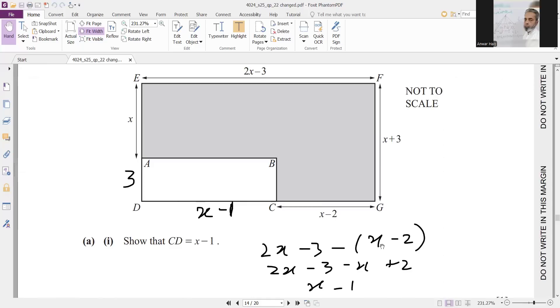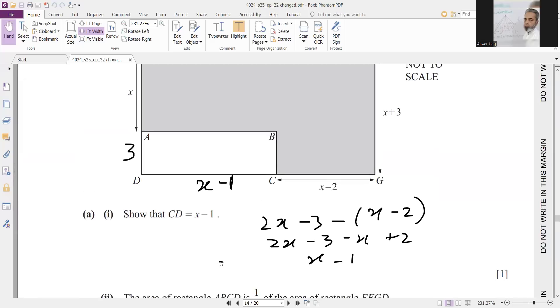2x minus 3 minus x minus 2. You have to mark brackets because there is a negative sign before. So when you will open the brackets, this negative sign will convert into positive. So you will get CD equals x minus 1.